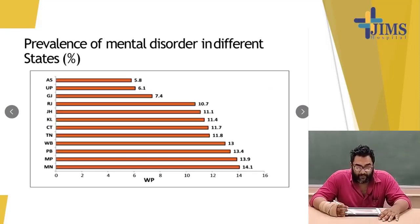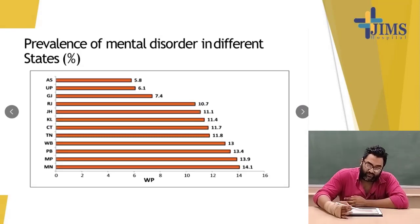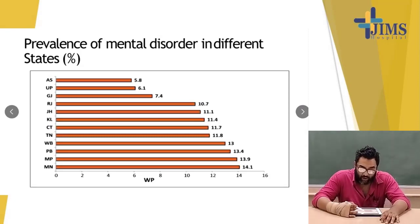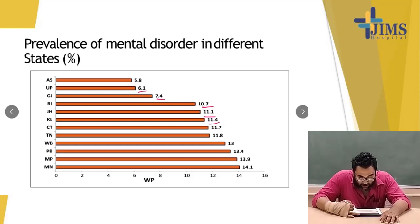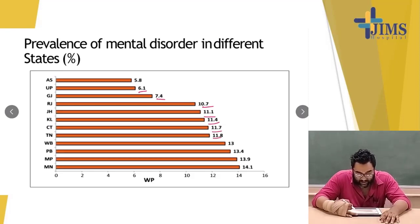Prevalence of mental disorder in different states: Assam 5.8%, Uttar Pradesh 6.1%, Gujarat 7.8%, Jharkhand 11.1%, Kerala 11.4%, Chhattisgarh around 7%, Tamil Nadu 11.8%, West Bengal 13%, Punjab 34.4%, Madhya Pradesh 35.9%, and Manipur 14.1%. This study was conducted across 12 states.